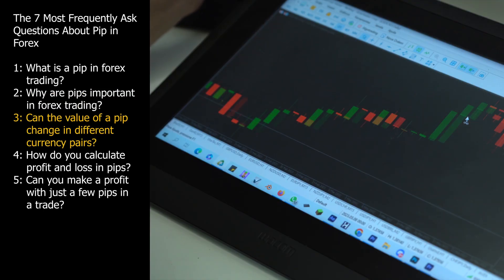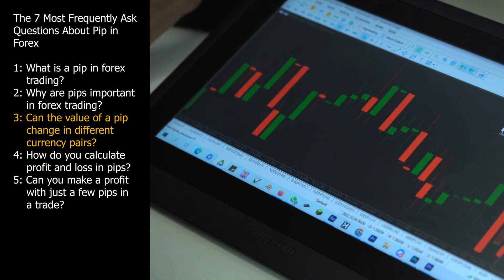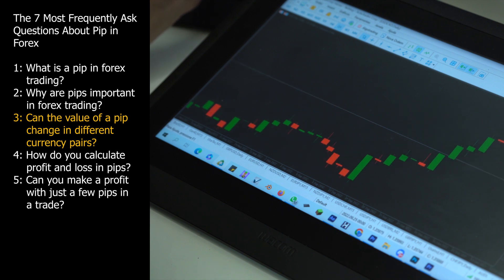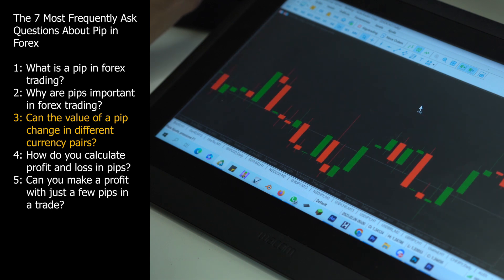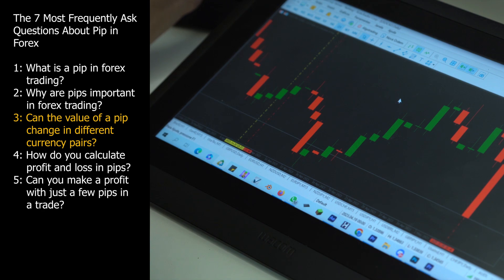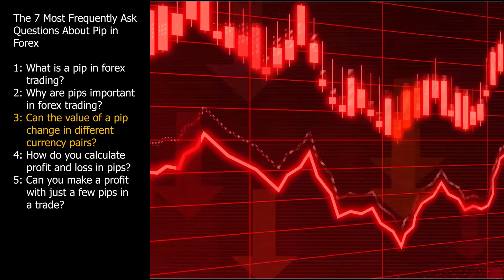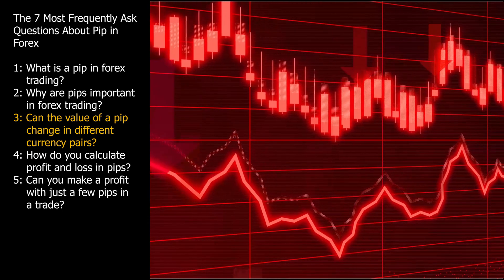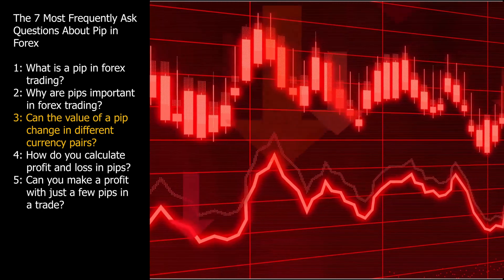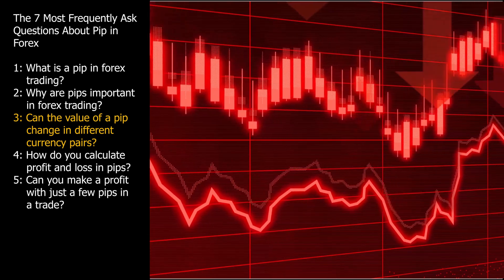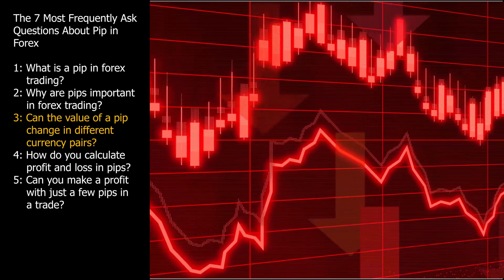Question 3. Can the value of a PIP change in different currency pairs? Yes, the value of a PIP can change in different currency pairs in Forex trading. The value of a PIP is primarily determined by the specific currency pair you are trading and the exchange rate. Some currency pairs have a fixed PIP value, while others have a variable PIP value. For most currency pairs, a PIP is equivalent to 0.0001. However, in some currency pairs such as those involving the Japanese Yen (JPY), a PIP is typically 0.01, due to their lower exchange rates.